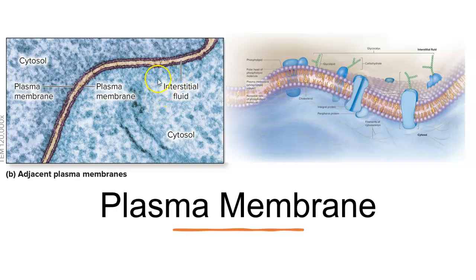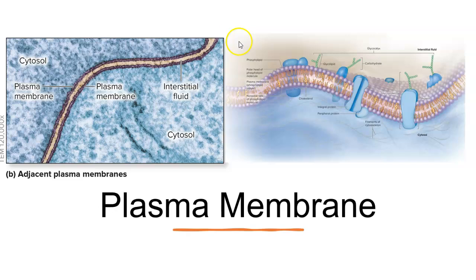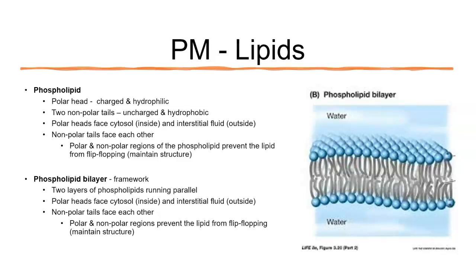Now let's look at the picture on the left side of the screen. This dark brownish-purple is one cell membrane, and this one is another cell membrane — so we have two cells here. The space between them, where you see the tan color, is the interstitial fluid or tissue fluid that fills the spaces between cells. As we start looking at the actual structure of that cell membrane, let's review what these phospholipids are and what they look like.